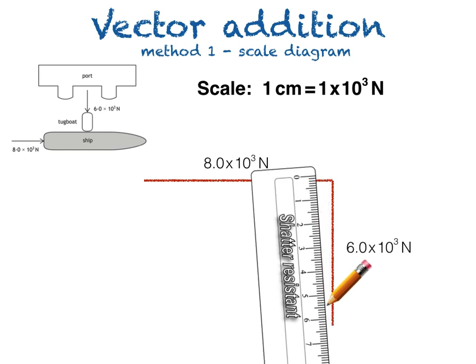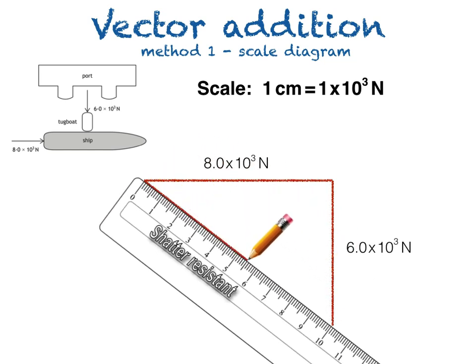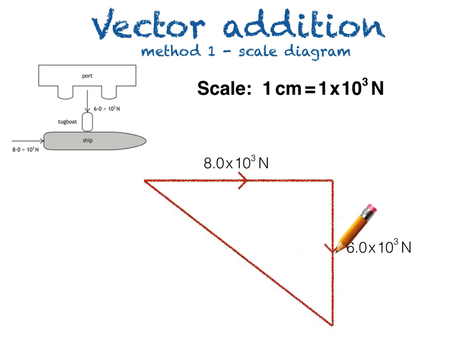We then draw a line from the start of our first vector to the end of the second one. We should now draw arrows on our vectors to show their direction: one arrow on the vectors being added and two on the resultant vector.